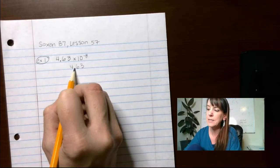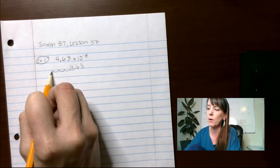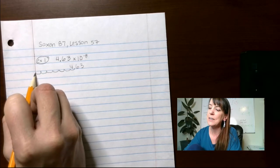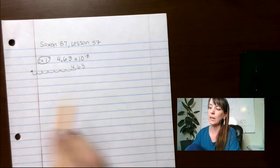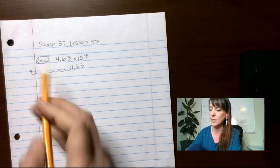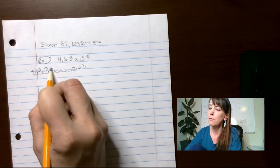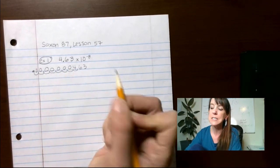So we're going to move it to the left 8 spots. 1, 2, 3, 4, 5, 6, 7, 8, which means we're going to put the decimal there. We need something to fill in here. So we're going to throw some zeros in here. 3, 4, 5, 6, 7 zeros.